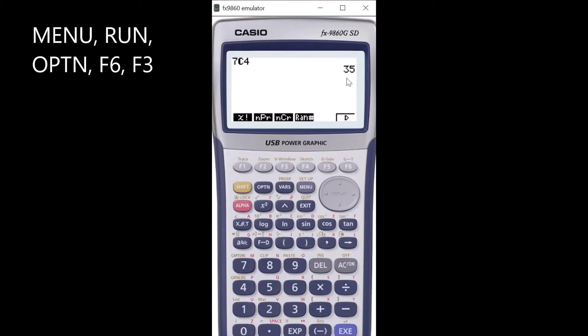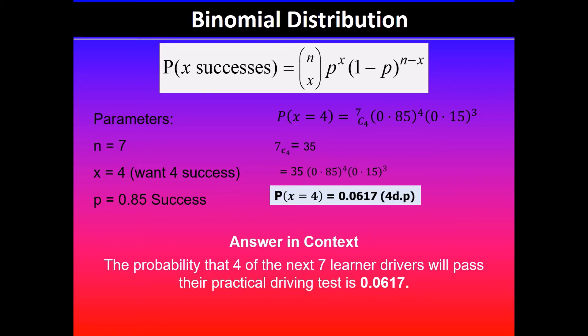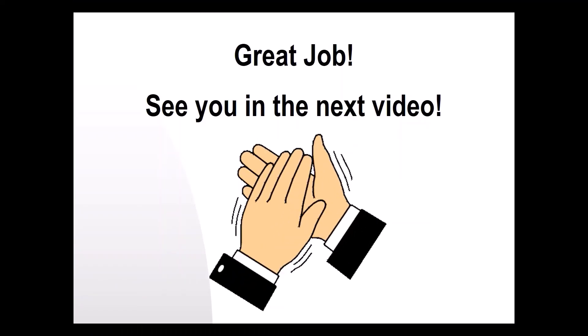You can see that it comes to 35. Now substituting 35 in the equation, so 35 times 0.85 to the power 4 times 0.15 cubed gives you a probability of 0.0617. So the probability that four of the next seven learner drivers will pass their practical driving test is 0.0617. Thanks for watching, I'll see you guys in the next video.